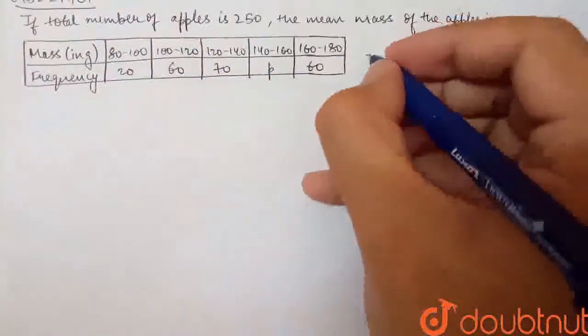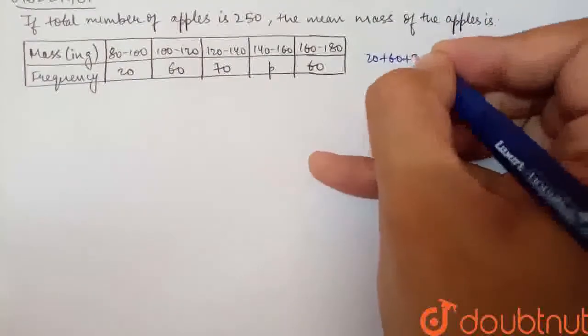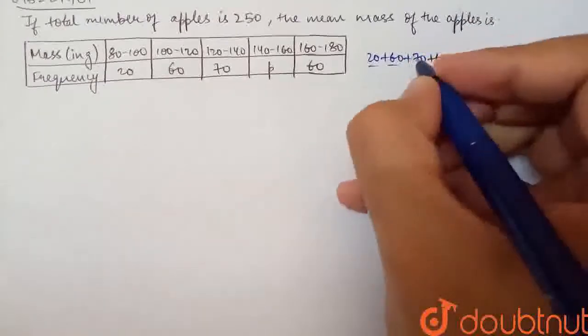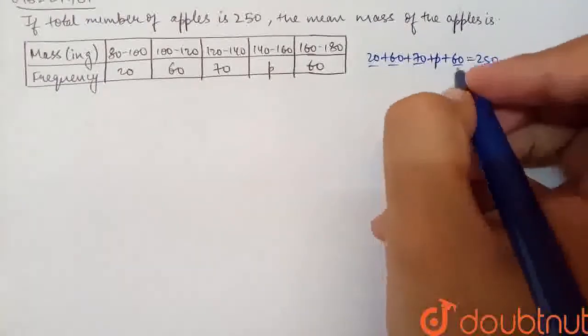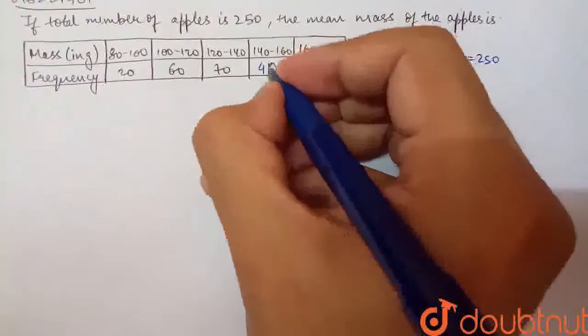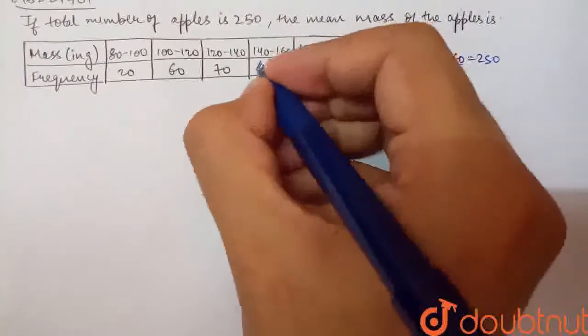So I can find the p value here. I have said that 20 plus 60 plus 70 plus p plus 60 will be 250. So 20 and 60 is 80, 70, 150 and 60 is 210. So p comes out to be 40. So what can I put in this place? I can put 40, 40.